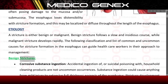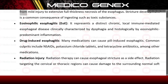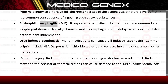Corrosive substance ingestion: accidental ingestion of or suicidal poisoning with household cleaning products are not uncommon occurrences. Substance ingestion could cause anything from mild injury to extensive full-thickness necrosis of the esophagus. Stricture development is a common consequence of ingesting such toxic substances.